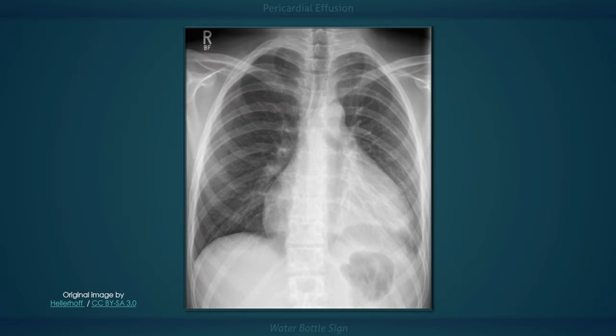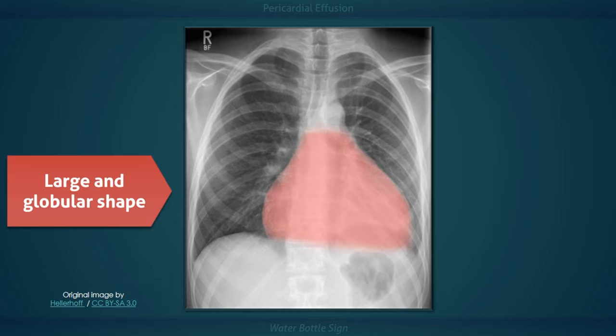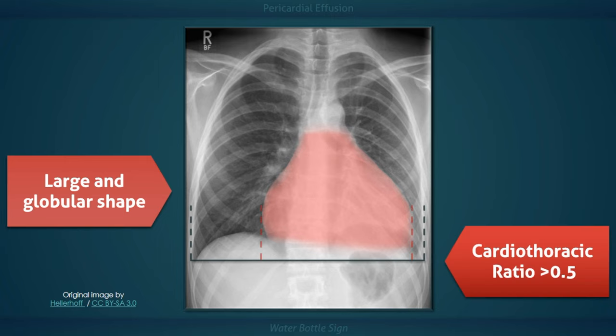When looking at this chest x-ray, the first thing that may come to your attention is the unusual appearance of the cardiac silhouette. It has a large and globular shape, which apparently resembles an old-fashioned leather water bottle — a fitting description since the pericardial sac is filled with fluid. More objectively, the cardiothoracic ratio in this image is approximately 0.6, which is larger than normal. On a posterior-anterior radiograph such as this one, the cardiothoracic ratio should be less than 0.5.